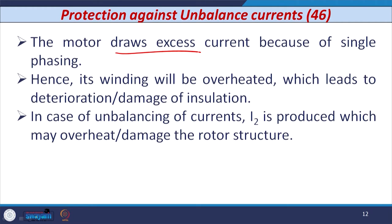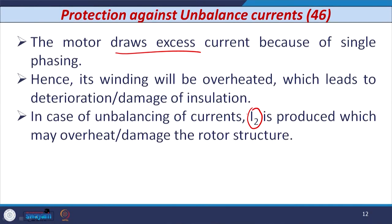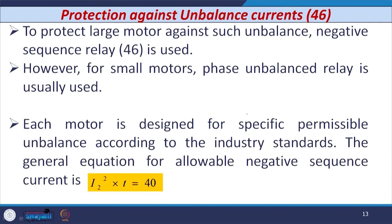The motor in this situation draws very high current because of single phasing, hence its winding will be overheated, which leads to deterioration of the insulation or sometimes damage of the insulation. In case of unbalanced current, negative sequence current I2 is produced which may overheat or damage the rotor structure. The heat produced because of the negative sequence current is 6 times the heat produced when positive sequence current flows.